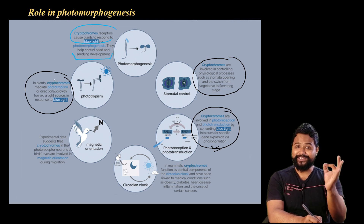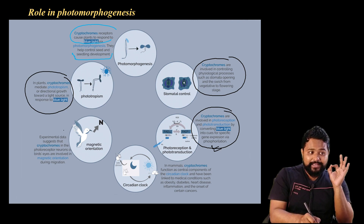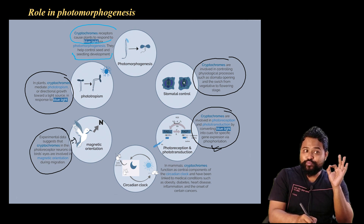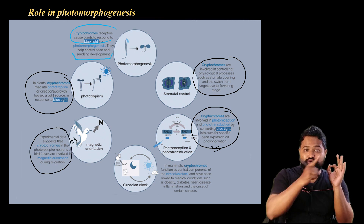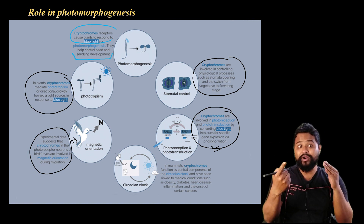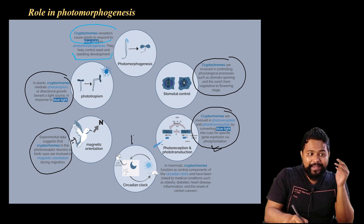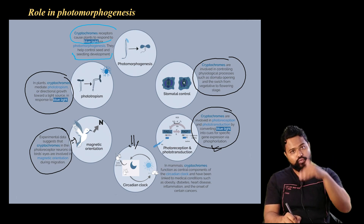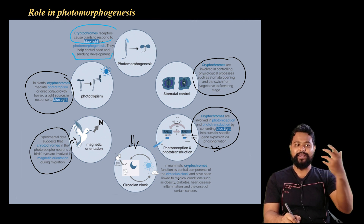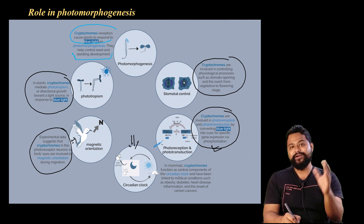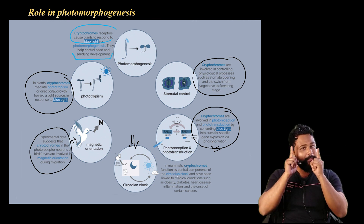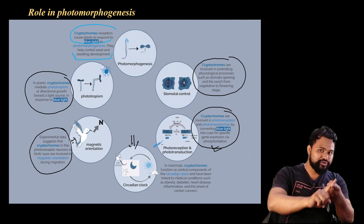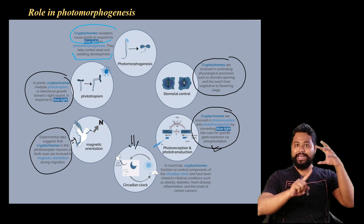Cryptochromes also mediate phototropism — light movement — in plants. Cryptochrome is an important pigment. In birds, cryptochrome helps with directional navigation. Cryptochrome is a central component of the circadian clock and is important in plants, insects, mammals, and birds.